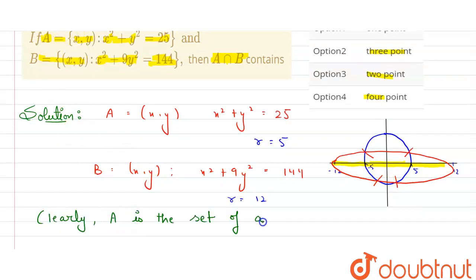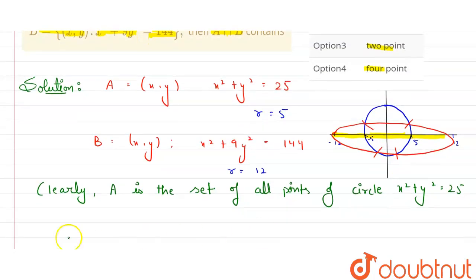So we will write here: Clearly A is the set of all points on a circle and the equation of the circle is x²+y²=25.